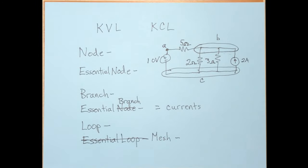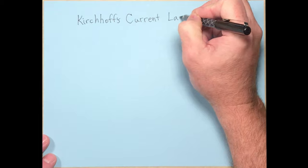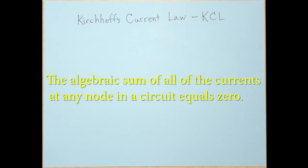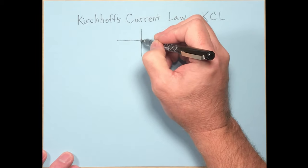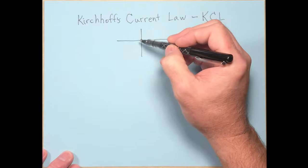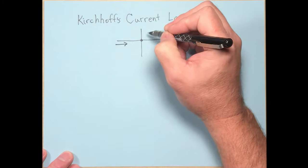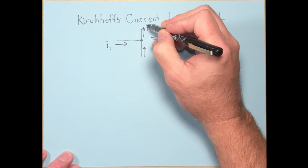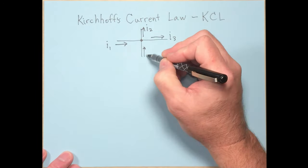All of these definitions are important because we'll use them when talking about KVL and KCL. Let's begin with Kirchhoff's current law, KCL. KCL states: the algebraic sum of all of the currents at any node in a circuit equals zero. Consider a node with four wires connected: a current going in, another going out, another going out, and another going in. Call these I1, I2, I3, and I4.